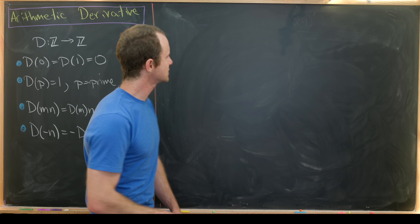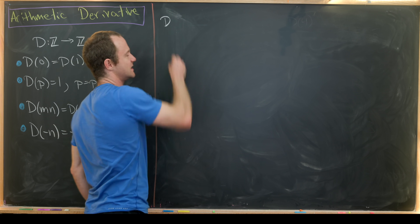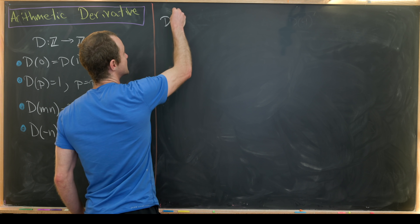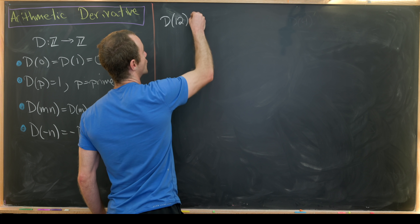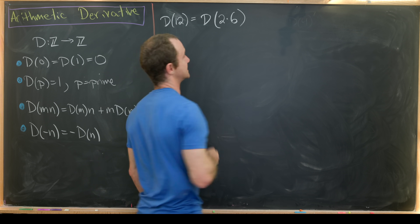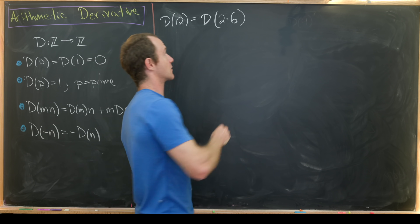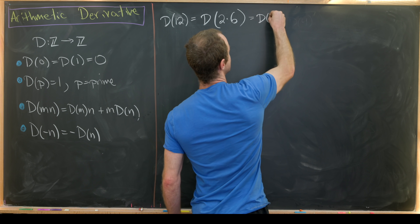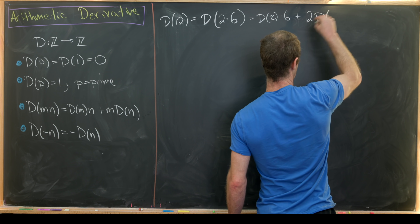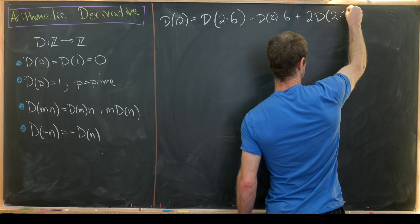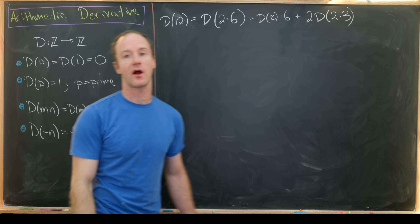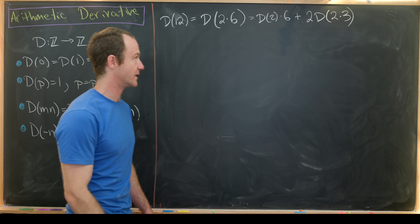Let's look at a couple of examples first, and then compare and contrast this with the normal derivative. Let's calculate d of 12. That's going to be d of 2 times 6. We can use our product rule to write that as d(2) times 6 plus 2 times d(6). We'll write 6 as 2 times 3, because our goal is to get this all the way down to primes.